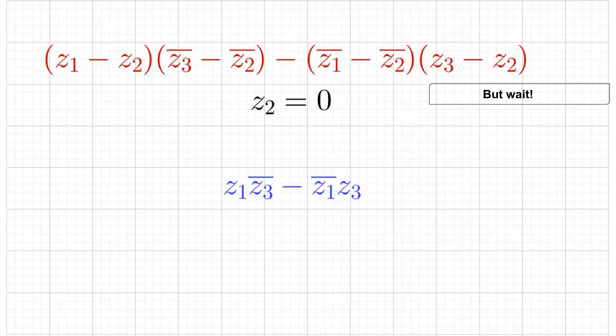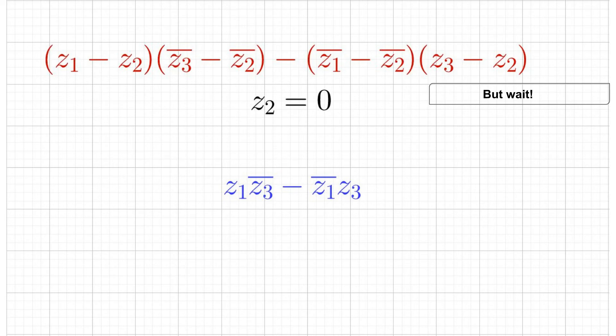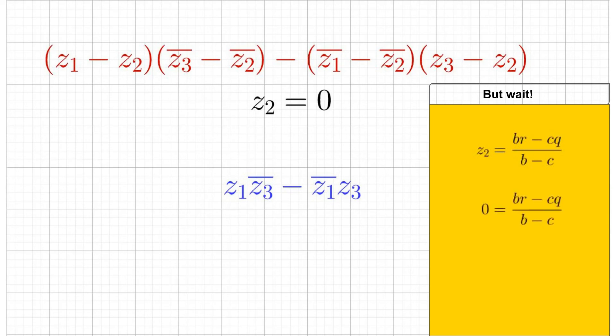But wait! Letting Z2 be the origin helps us in more ways than one. We can now set our equation for Z2 equal to zero and solve for r.